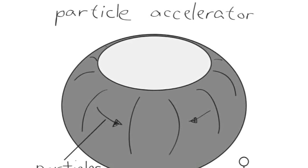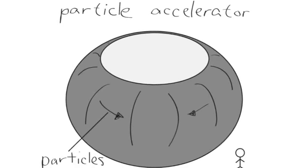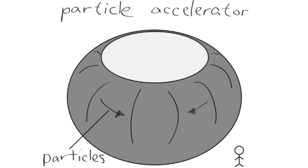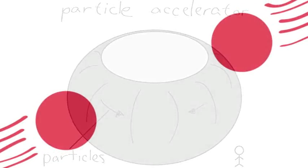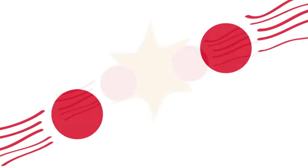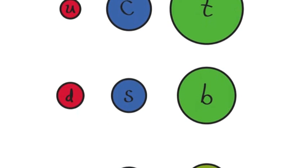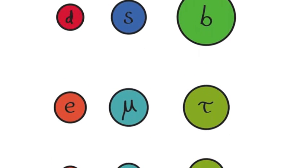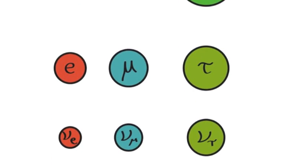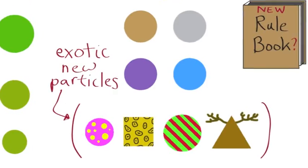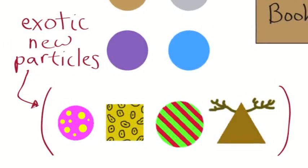At particle accelerators like the Large Hadron Collider, physicists are trying to create these new particles by violently smashing protons together. From sufficient energy, new particles can be created, just as in the Big Bang. This is how most of the types of particles that we know about were discovered, and we hope to find some of the new predicted particles in this way.